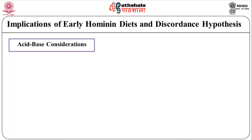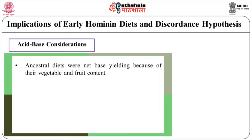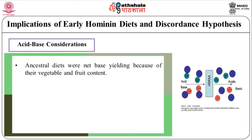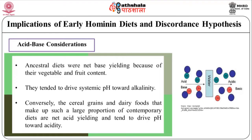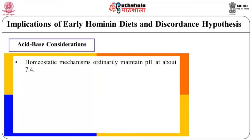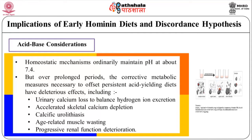Regarding acid-base considerations: ancestral diets were net-base-yielding because of their vegetable and fruit content, and tended to drive systemic pH towards alkalinity. Conversely, the cereal grains and dairy foods that make up such a large proportion of contemporary diets are net-acid-yielding and tend to drive pH towards acidity. Homeostatic mechanisms ordinarily maintain pH at about 7.4, but over prolonged periods the corrective metabolic measures necessary to offset persistent acid-yielding diets have deleterious effects, including urinary calcium loss to balance hydrogen ion excretion, accelerated skeletal calcium depletion, calciphylactic urolithiasis, age-related muscle wasting, and progressive renal function deterioration.